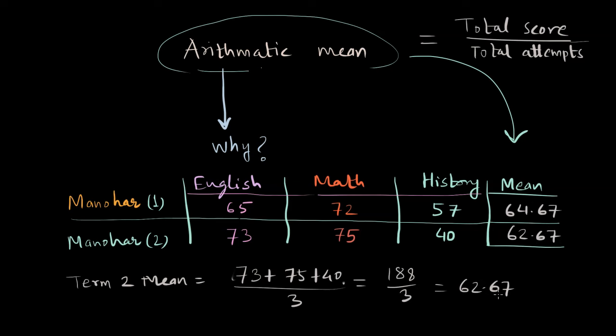After finding out mean we get the idea whether there is a performance dip or performance improvement in this case. Mean actually is a measure of calculating the performance when there is a varied data set that is available to us.